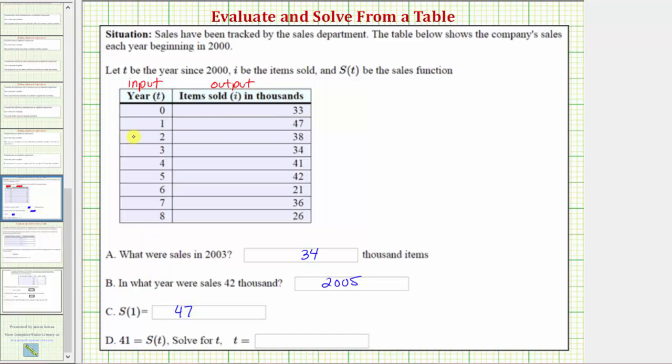And now for part d, we're given the equation forty-one equals s of t, solve for t. Well because we're given s of t equals forty-one, we know the function value or function output is forty-one. So we look for a forty-one in the second column. Notice how forty-one only occurs once in the second column, which is here.